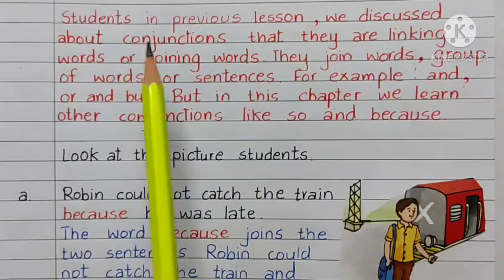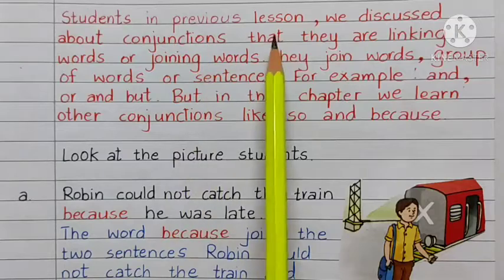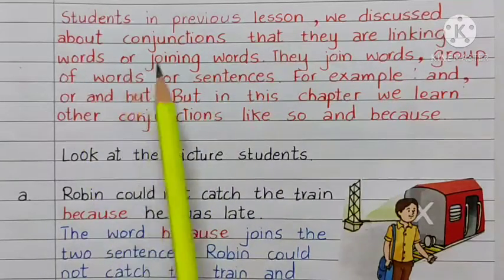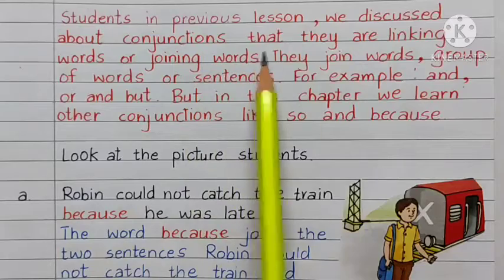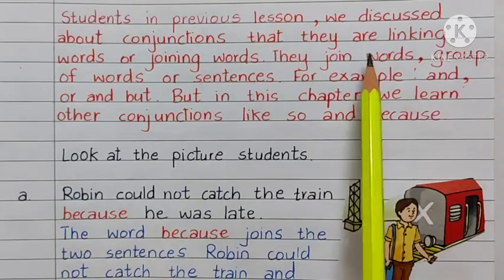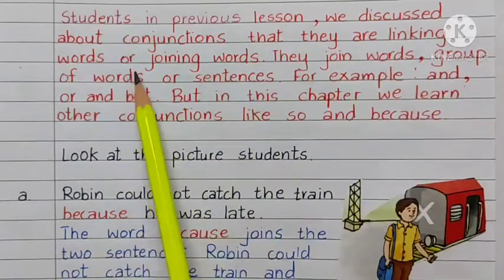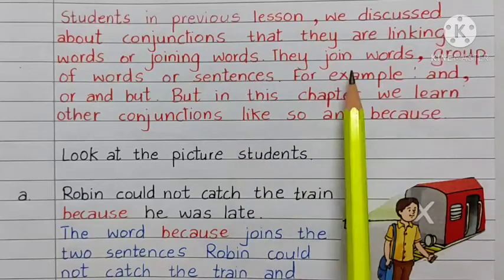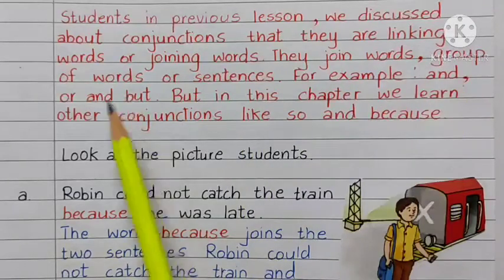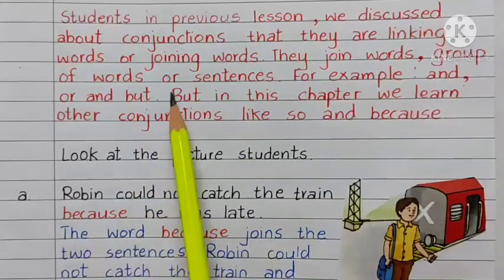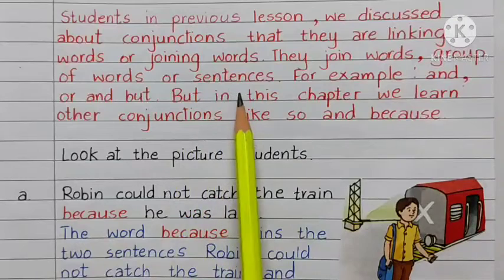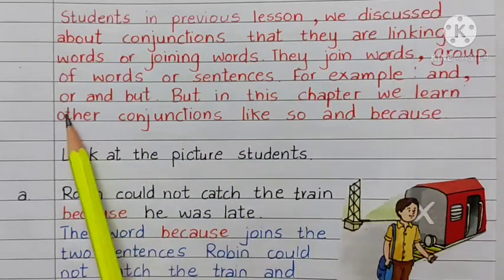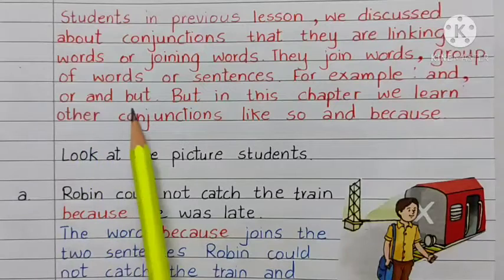Students, in the previous lesson we discussed about conjunctions — that they are linking words or joining words. They join words, groups of words, or sentences. For example: and, or, and but.